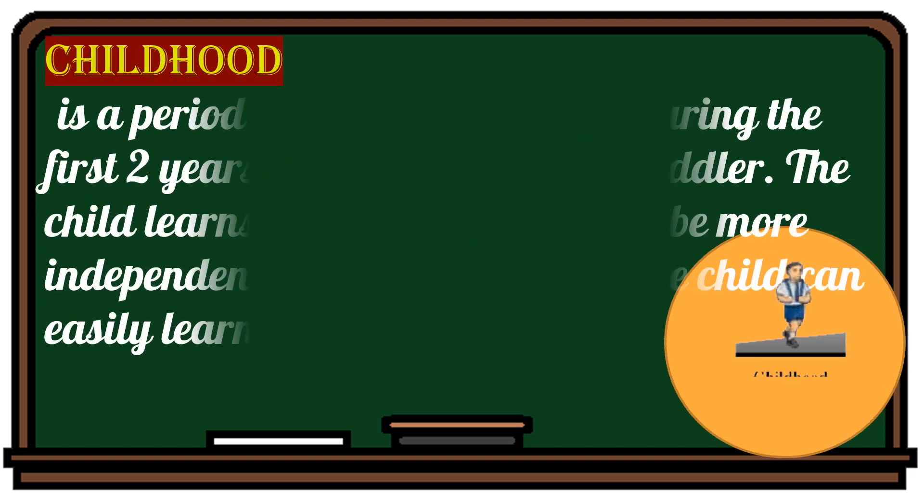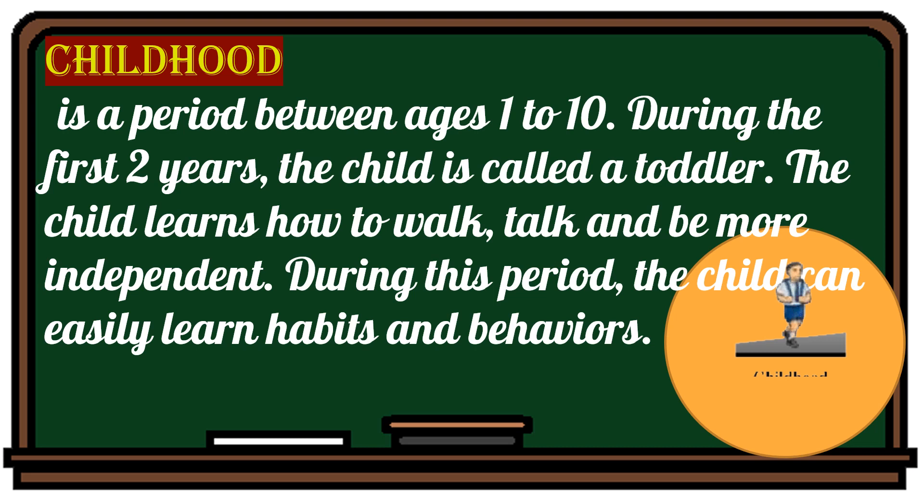Childhood is a period between ages 1 to 10. During the first two years, the child is called a toddler. The child learns how to walk, talk, and be more independent. During this period, the child can easily learn habits and behaviors.